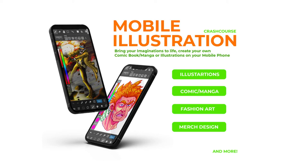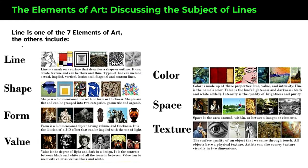Welcome to lesson two. Today we're talking about lines and everything you need to know about line art. Line is one of the seven elements of art: line, shape, color, texture, form, value, and space. We really want to look at number one in the elements of art and why line is very important to what we're considering today.